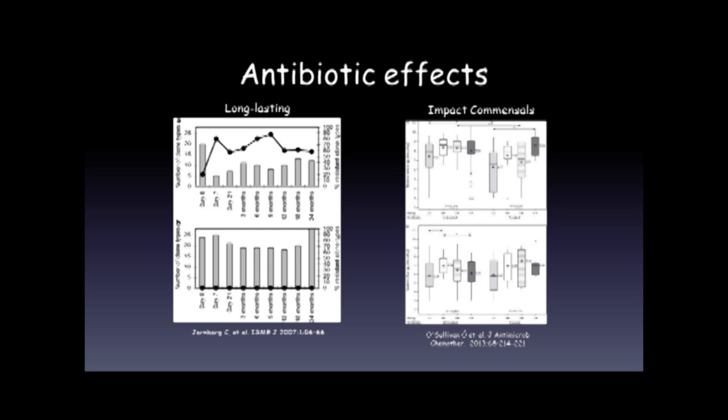Two studies show how long lasting these effects are. After seven days of antibiotic therapy there is a dramatic reduction in bacterial species, and even after the antibiotic is stopped you still see a reduction for up to 24 months. Looking at important commensals — bifidobacteria and lactobacilli — those who get antibiotics have a significant reduction in bifidobacteria, though relatively less impact on lactobacilli.